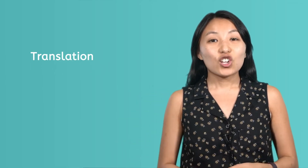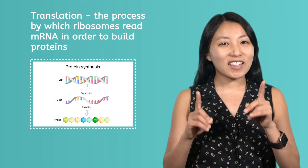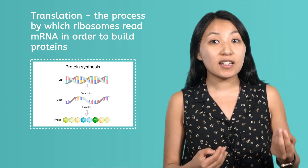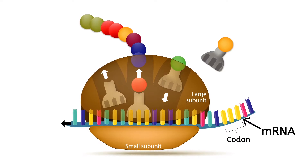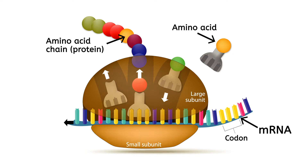The second major step of protein synthesis is translation. Translation is the process by which ribosomes read mRNA in order to build proteins. You can think of this as translating all those nitrogen bases into an actual protein that cells can use. mRNA is divided into codons, and each codon, which consists of three nitrogen bases, codes for one amino acid. As you will recall, amino acids are the building blocks of proteins. mRNA feeds through ribosomes almost like a zipper, and ribosomes read the RNA one codon at a time, adding the required amino acid to the protein before translating the next codon.